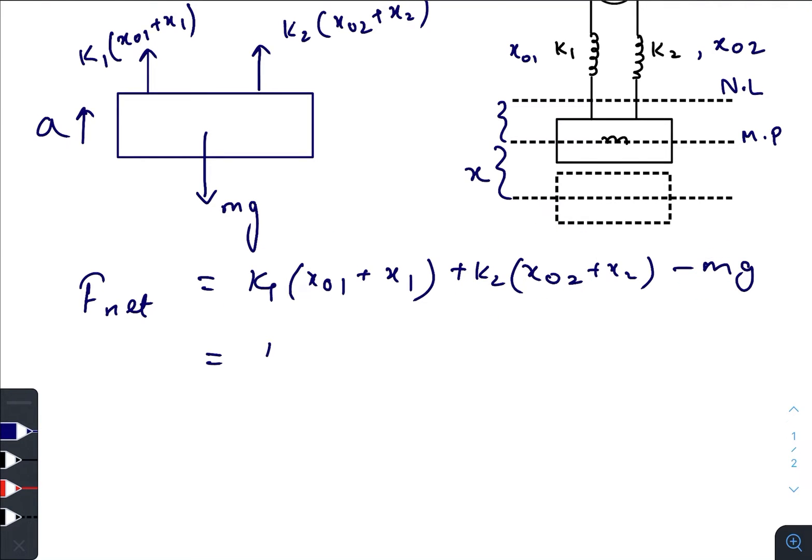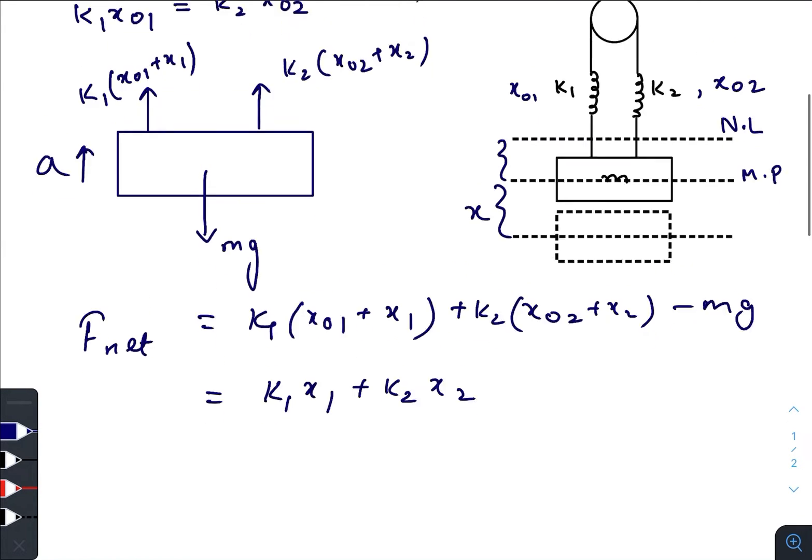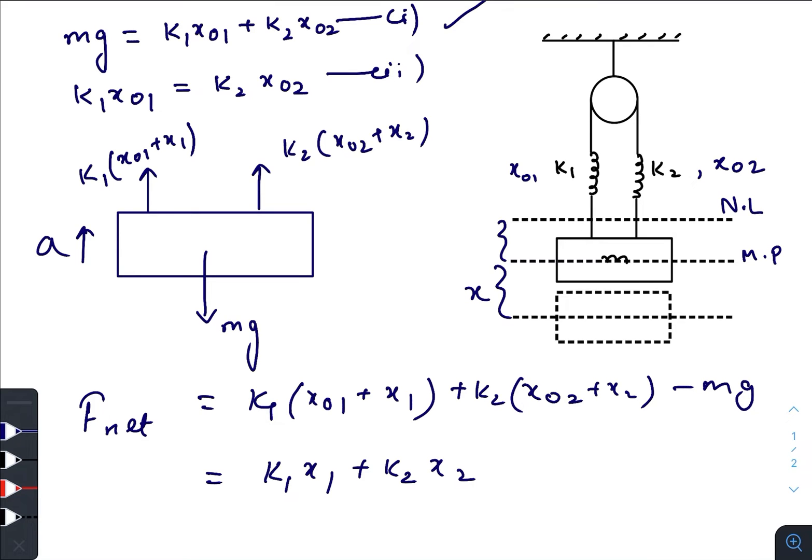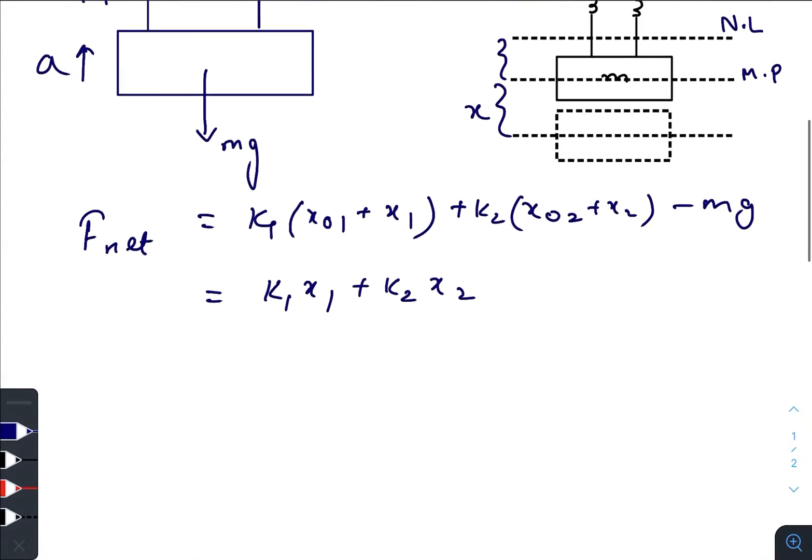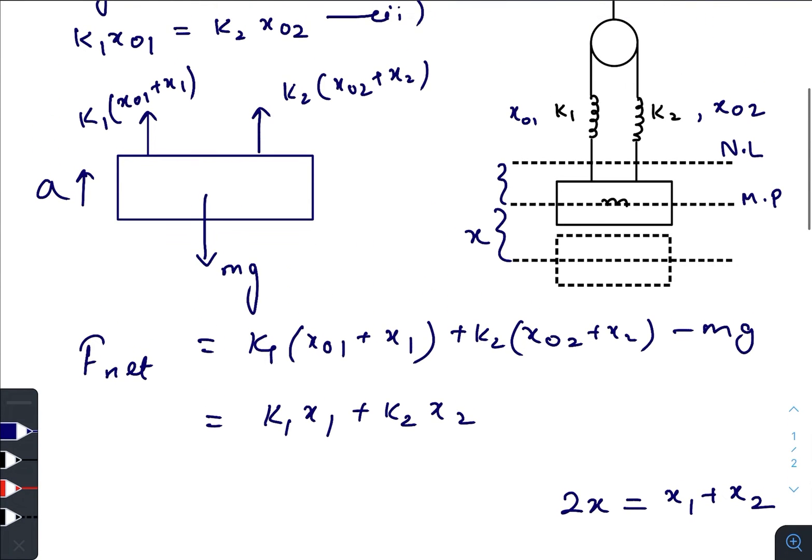So it reduces to k₁x₁ + k₂x₂. Now as you can see, these two points actually move by an amount x. So this whole string stretches by an amount 2x, and that 2x is supplied by the further stretching of the springs—let that be x₁ for the first one and x₂ for the second one.